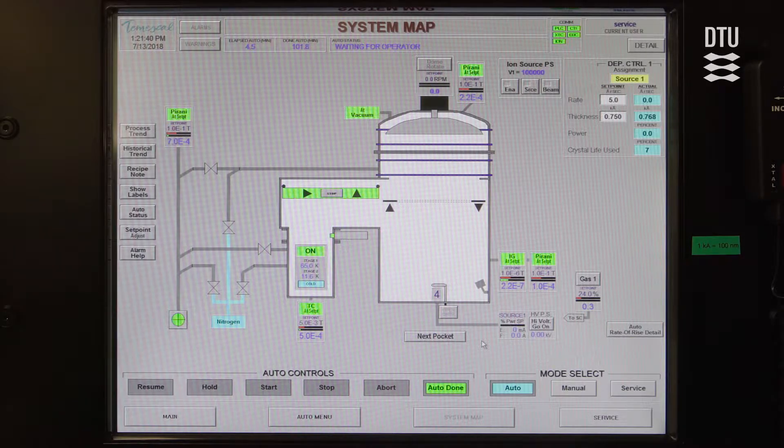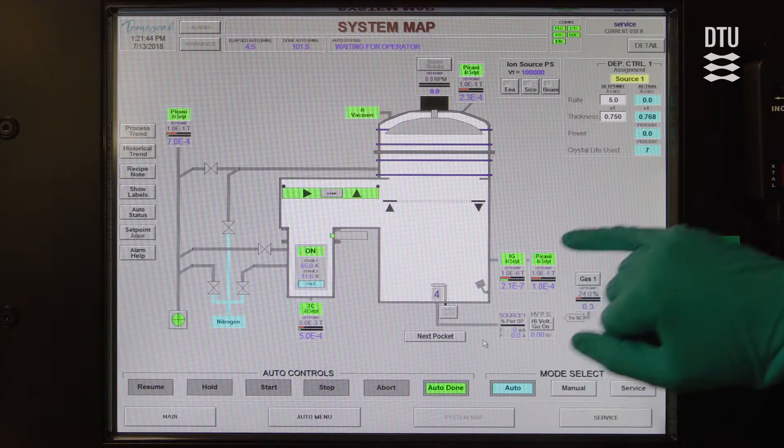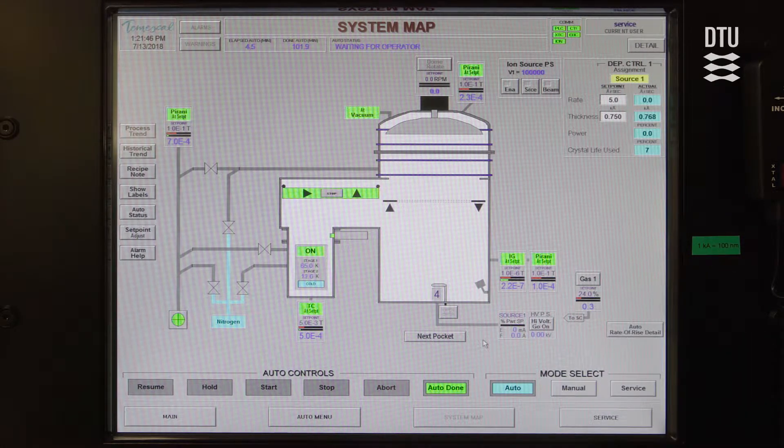Now we can see in the system map that the chamber has been cut down. We are actually at quite a low pressure, 2 times 10 to the minus 7 torr.